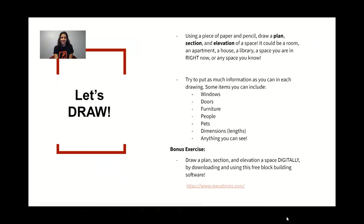And that's it! That concludes our brief introduction on architectural drawings. Now, the fun part — let's draw. Using a piece of paper and pencil, draw a plan, section, and elevation of a space. It could be a room, an apartment, a house, a library, a space you're in right now, or any space you know. Try to put as much information as you can in each drawing. Some items you could include are windows, doors, furniture, people, pets, dimensions, or anything else you see. As a bonus exercise, you can draw a plan, section, and elevation digitally by downloading and using this free block building software called Mecca Bricks.